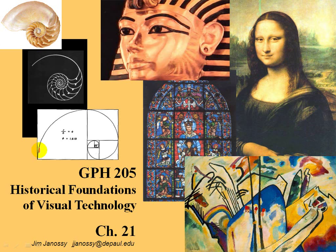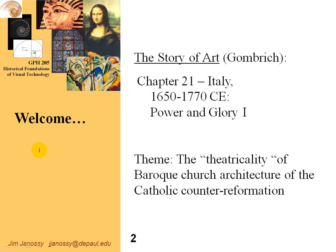Hi, this is Jim Janesey. We're now taking a look at Chapter 21 of the Gombrich textbook The Story of Art. We're going to be looking at the late 1600s into the 1700s in Italy. Gombrich calls this 'Power and Glory.' It's about the Baroque era and the theme here is the theatricality of Baroque church architecture.